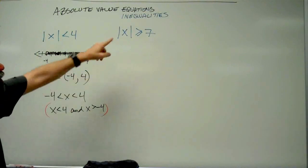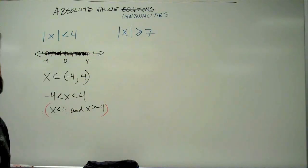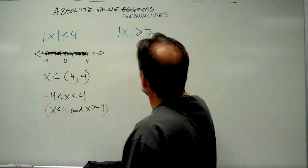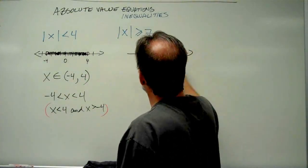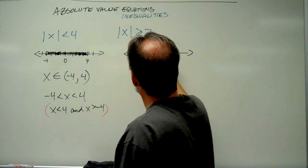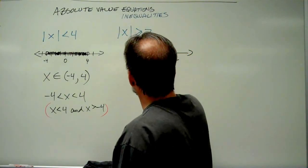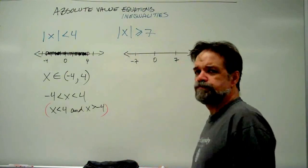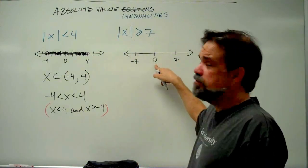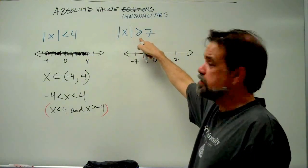So that's example one. Example two: the absolute value of x is greater than or equal to 7. Let's see what this number line is going to look like. Here's 0, here's 7, and here's negative 7. Well, 0 is not going to be in there because the absolute value of 0 is 0, and that is not greater than or equal to 7.